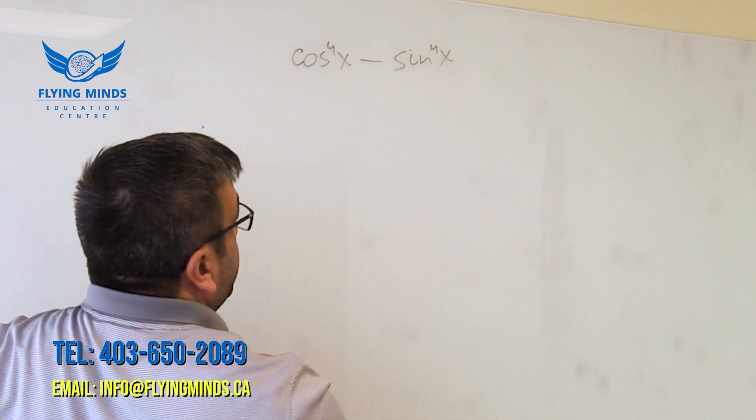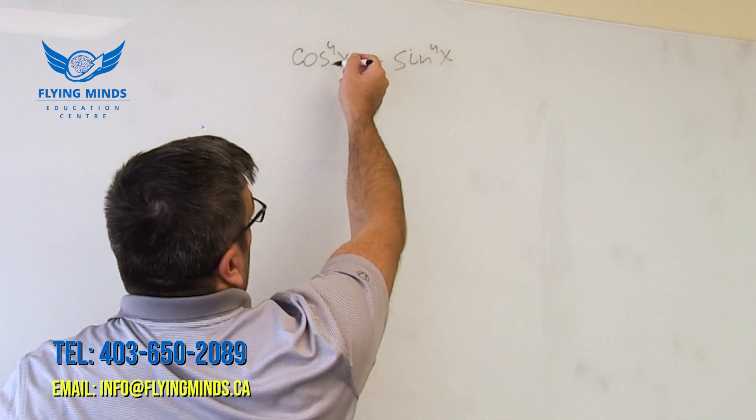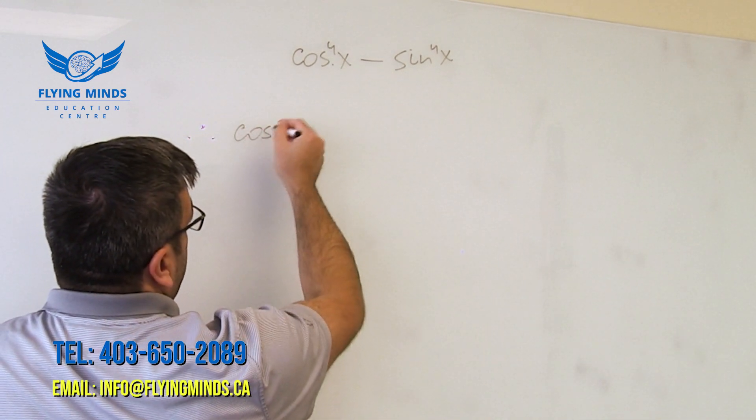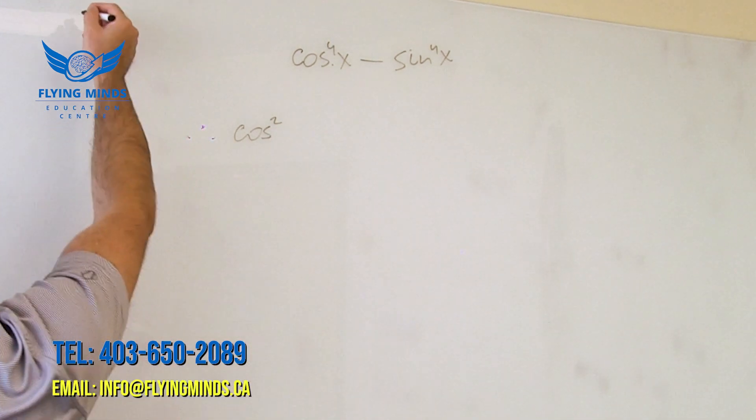But how can we rewrite cosine to the 4th? So we can rewrite it as cosine squared, right? We remember power rules.